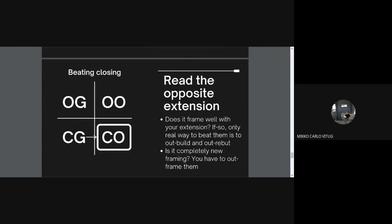Meeting closing: you have to read the opposing extension. First, does it frame well with your extension — did you both have the same reframe? If so, the only way to beat them is to simply out-argue, out-rebut, out-build them. It's a straightforward one-on-one debate. If you try to frame them out, you will be framed out along with them. The second question: is it completely new framing? If so, you have to out-frame them. Make it look like they're kind of boxed out, make them look unengaging. Explain why the new extension might be new but takes on a frame that is just far less important than other arguments already being argued within the debate.